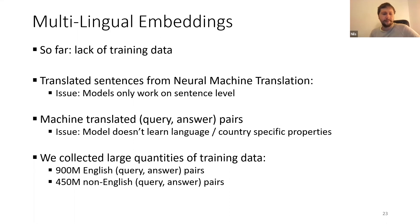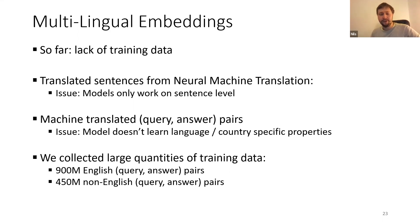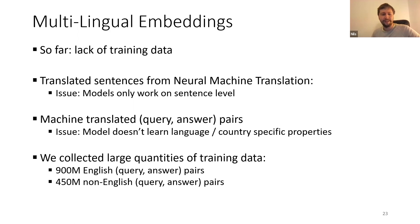Another line of research uses machine translation like Google Translate to translate query-answer pairs into other languages, but here the models don't learn language- and country-specific properties. For example, people used MS MARCO — which has questions like how to file taxes in the US — and translated it to German. So now the model knows in German how to file taxes in the US, but has absolutely no idea how to do taxes in Germany. Models are really bad in out-of-domain settings, so if you ask a German-specific question like how to get a tax refund, the model has no idea.